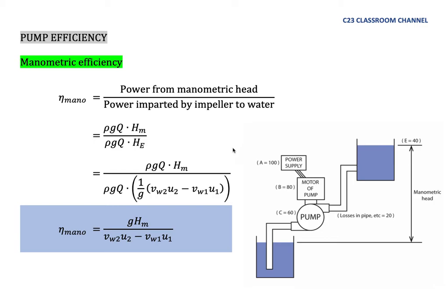For today we would like to discuss about centrifugal pump efficiency. There are three types of pump efficiency that we should know. The basic idea is that efficiency equals power output divided by power input — this tells us how much we can get from the source that we have. The first type is manometric efficiency.